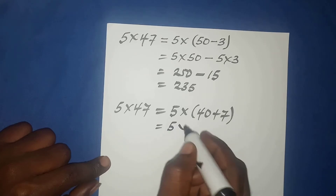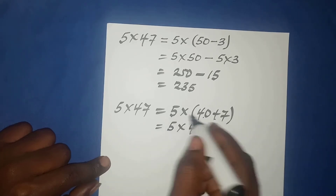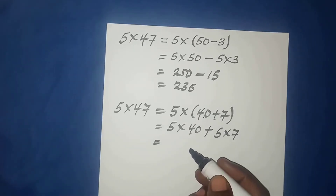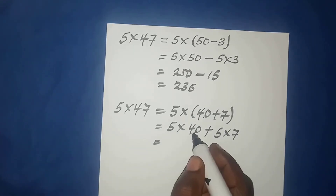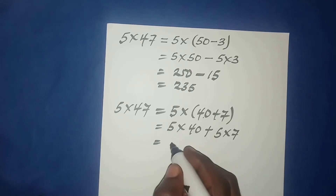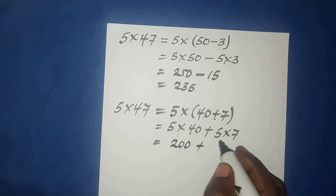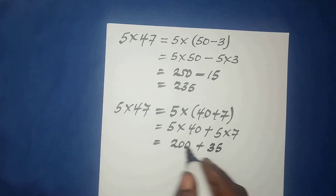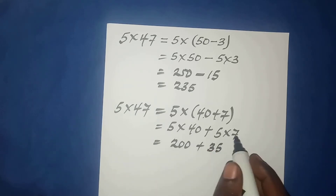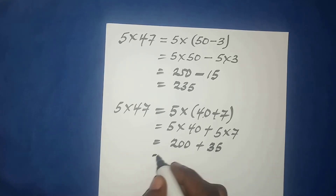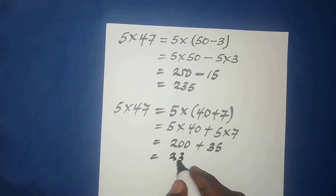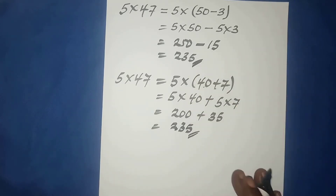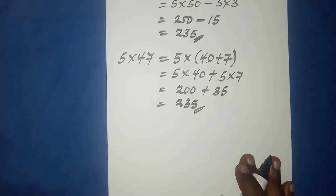Using the distributive property: five times forty plus five times seven. Five times forty is two hundred, and five times seven is thirty-five — both easy to compute without a calculator. So two hundred plus thirty-five gives two hundred thirty-five, which is the same answer.